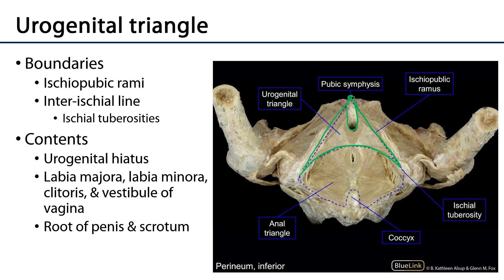The urogenital triangle also includes the vestibule of the vagina, the clitoris, the erectile tissues and associated muscles, the perineal membrane, and more — topics to be covered in a subsequent learning objective and video. It can also include the root of the penis, where the crura of the penis converge with the bulb of the penis, and is inclusive of the scrotum, the fleshy sac in which the testes are maintained.